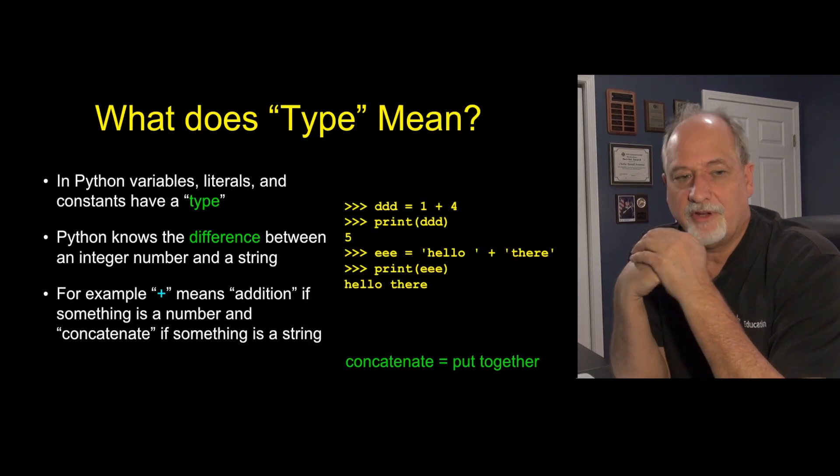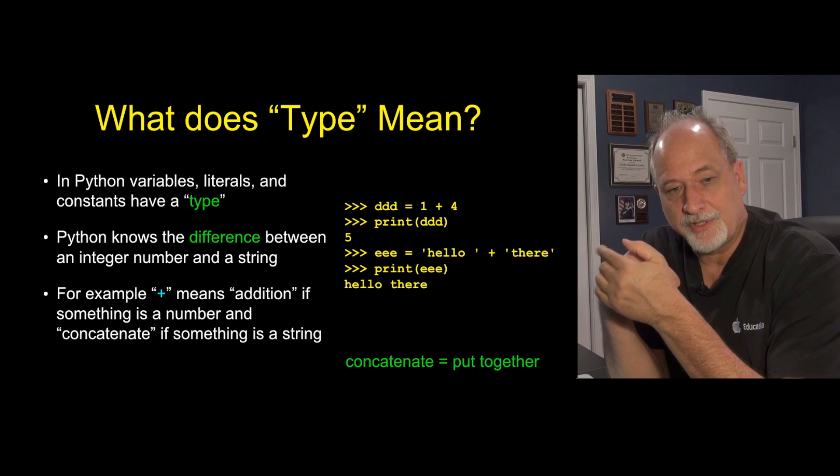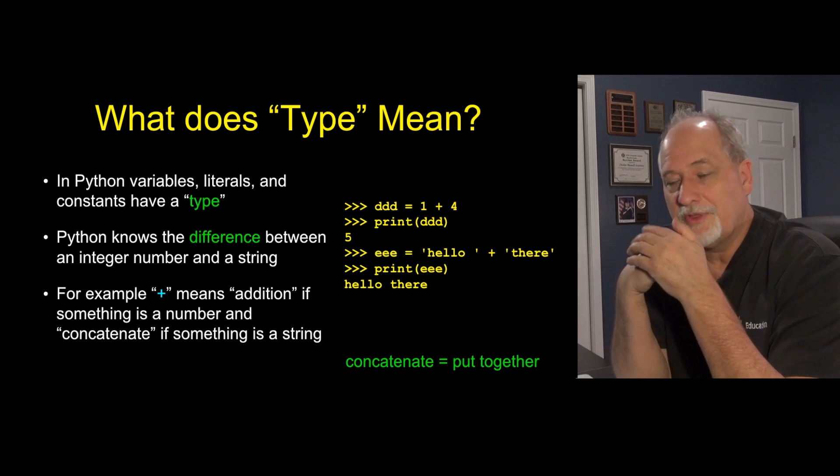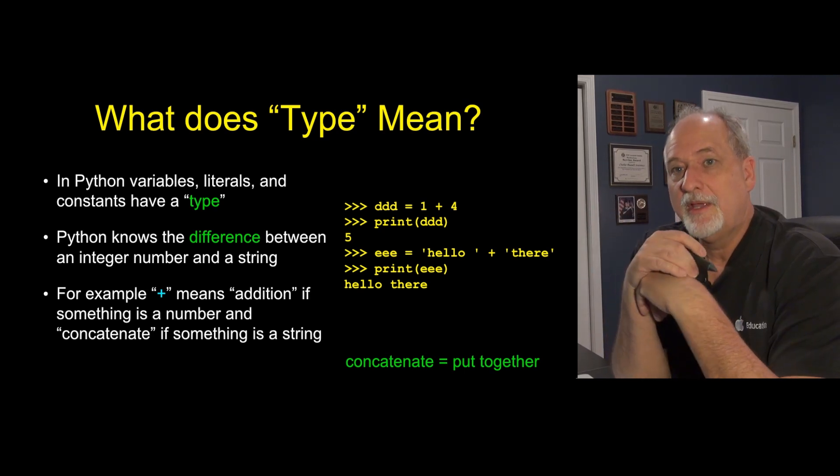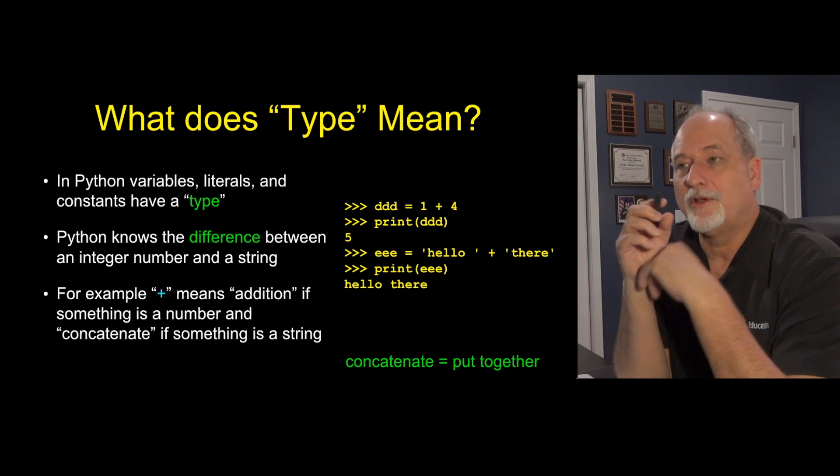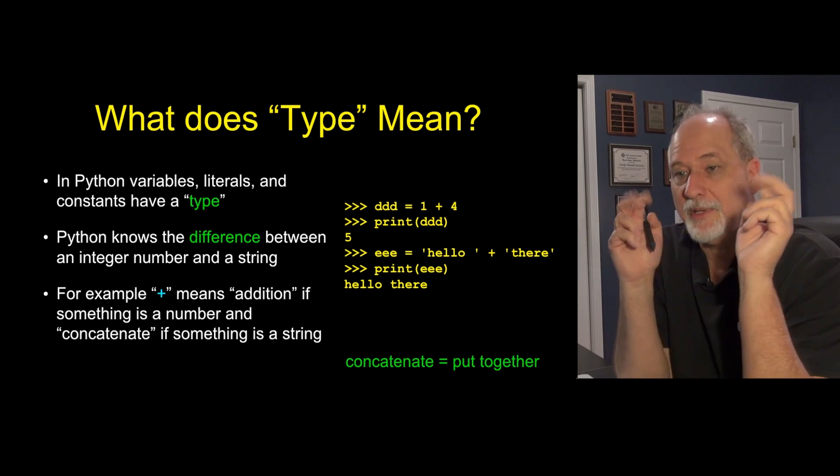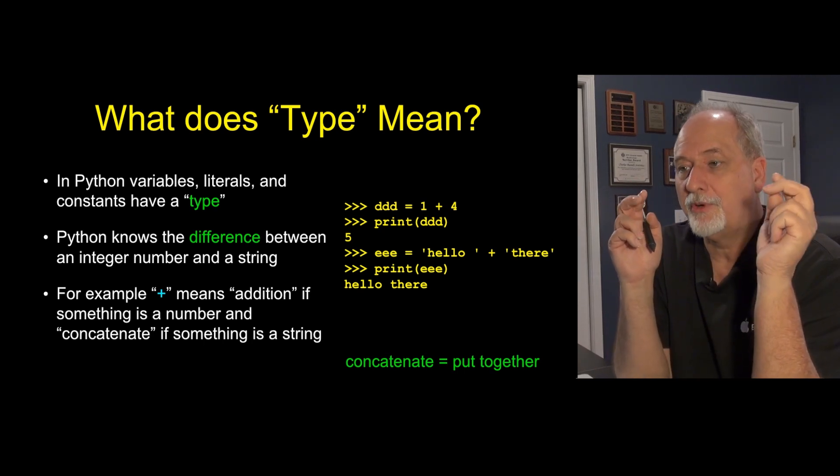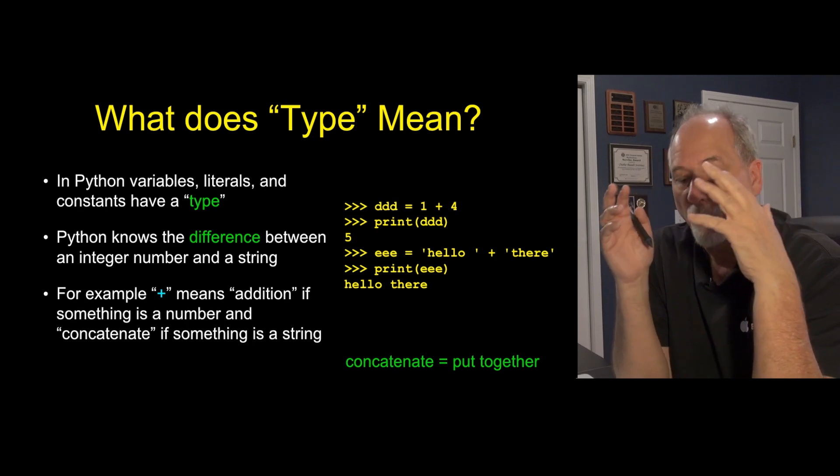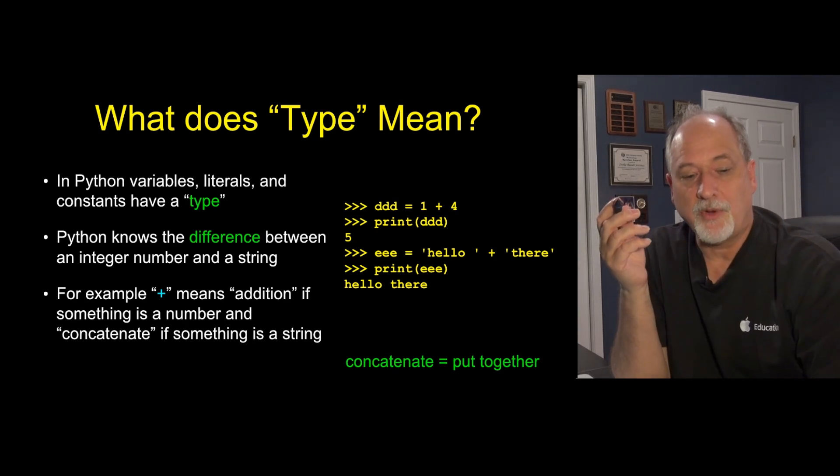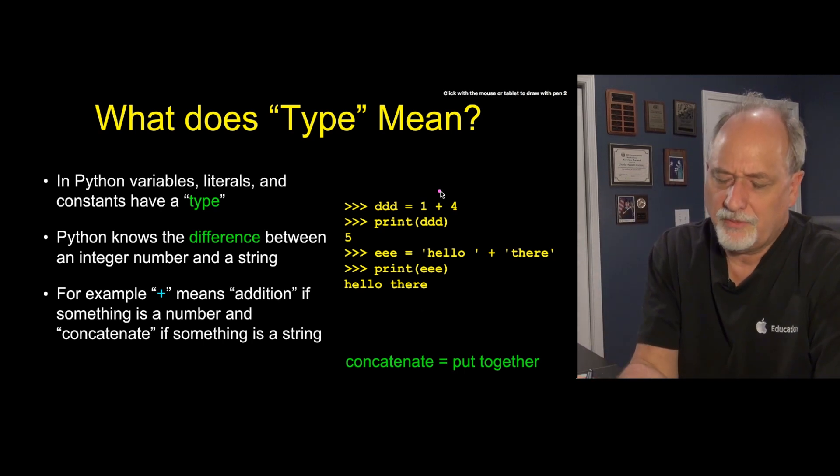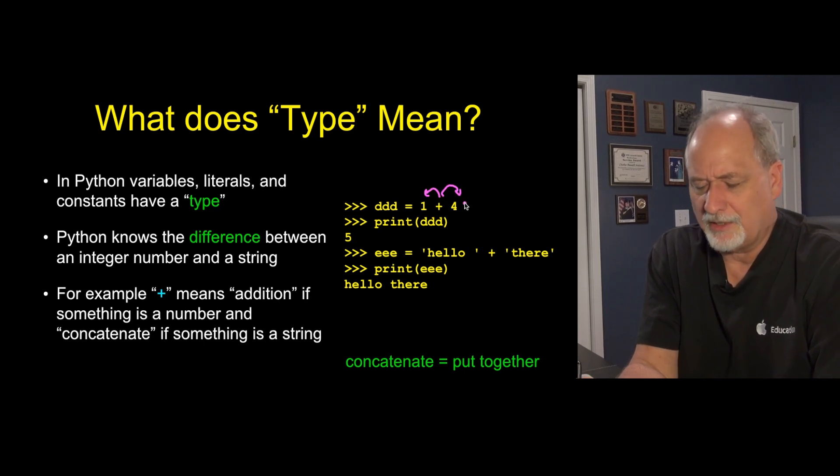We talked about variables and computing values to put inside variables, but the one thing you've maybe noticed as we go by is we have different kinds of data. We call it type. Is this of type integer? Is this of type floating point number? Is it of type string? Python is pretty smart about various kinds of types of data. We're adding 1 plus 4 here, and Python knows that's an integer and that's an integer. We'll add it together and make it an integer.